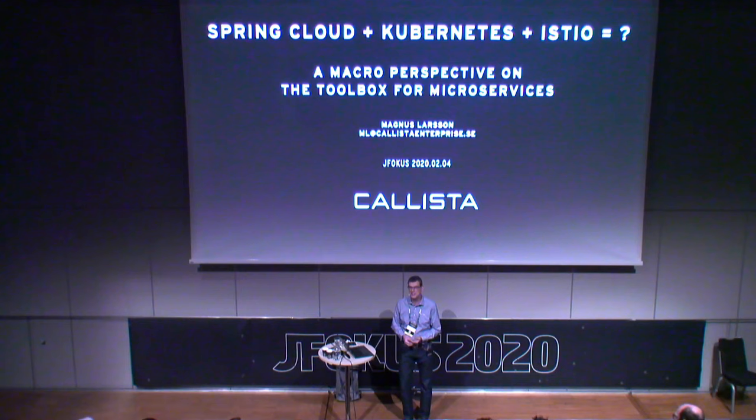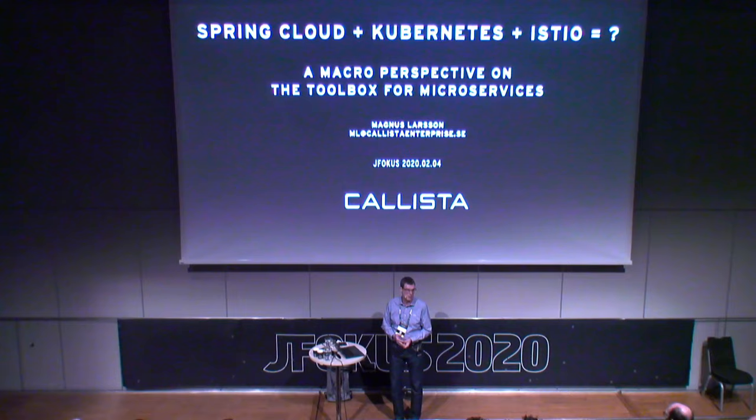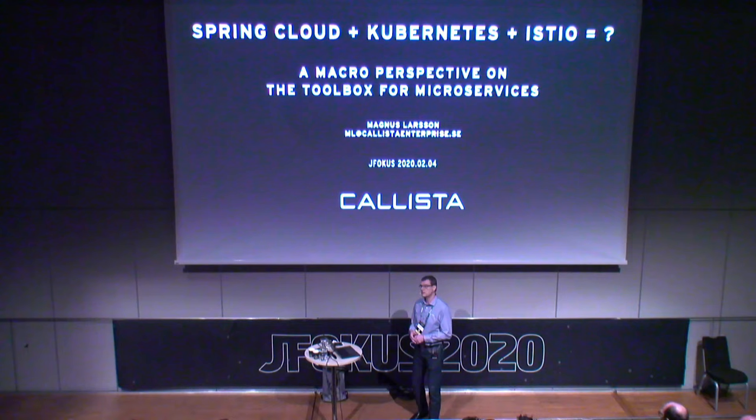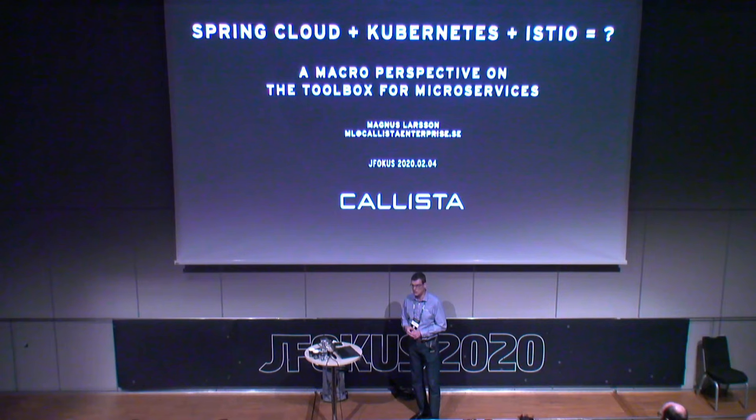I like to start by saying that developing a single microservice is very simple. Handling a system landscape of cooperating microservices can be a bit harder, and to get them ready for production in terms of scalability, robustness, resilience and such things can actually be really challenging. Unfortunately, a number of open source tools have emerged during the last few years that can help us with these challenges — tools such as Spring Cloud, Kubernetes and Istio.